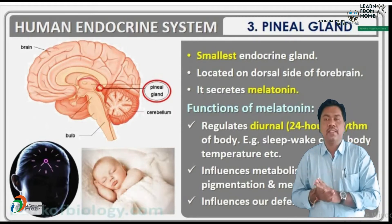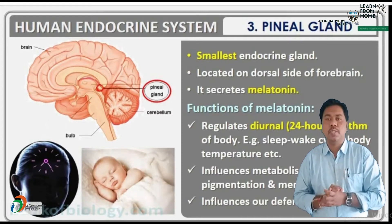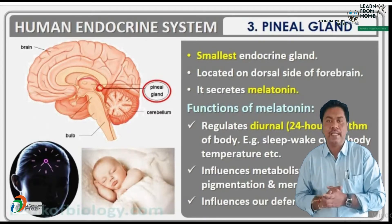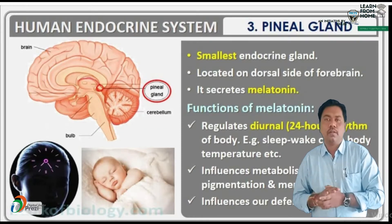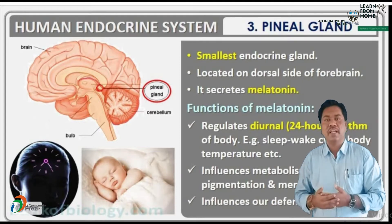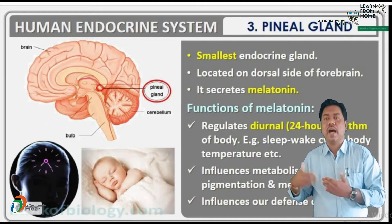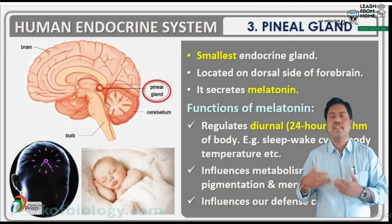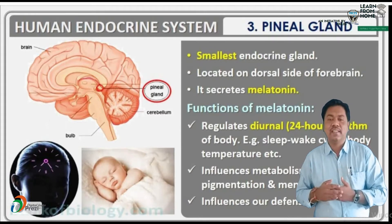The largest endocrine gland is the thyroid gland, which is present in the neck area. The smallest endocrine gland is the pineal gland, located in the dorsal side or center of the brain, in the epithalamus. This pineal gland is about 0.8 centimeters long and about 0.1 grams in weight. It is also known as the third eye.